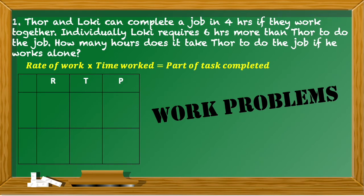Let's assign the first row for Thor and the second row for Loki. We'll fill in all the boxes with the information from our problem. Rate is equivalent to the portion of one particular job over a period of time. So for Thor we have one over x, where x represents the time Thor works for this particular job.